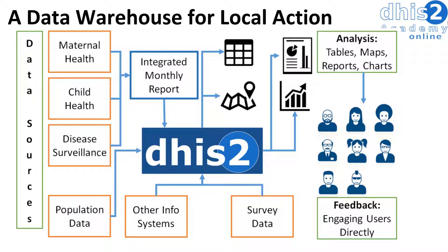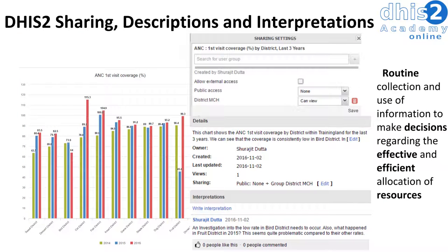Users can then engage with the data in various ways. We can create predefined reports for users to access, and also allow users to create their own reports within DHIS2. By allowing users to interact directly with the data within the system, we are able to close off this feedback loop, as users can engage directly with the data and make conclusions based on what they have found. A variety of outputs can be made, shared with other users, given descriptions for appropriate context, and discussed between users in the system.